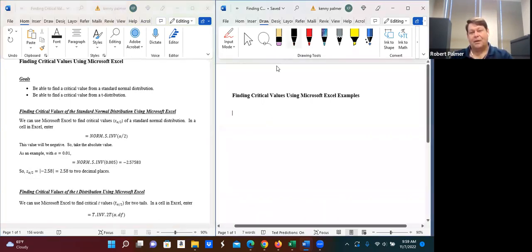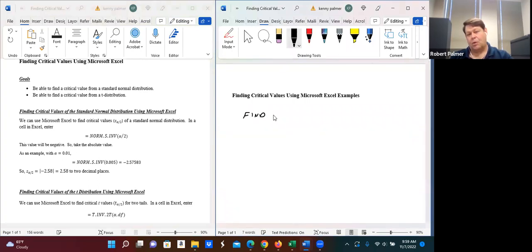Now, let's do another example. We want to find Z of alpha over 2 for something different like, say, 85% confidence. Something a little bit different. The usual ones, of course, are 90%, 95%, and 99%.